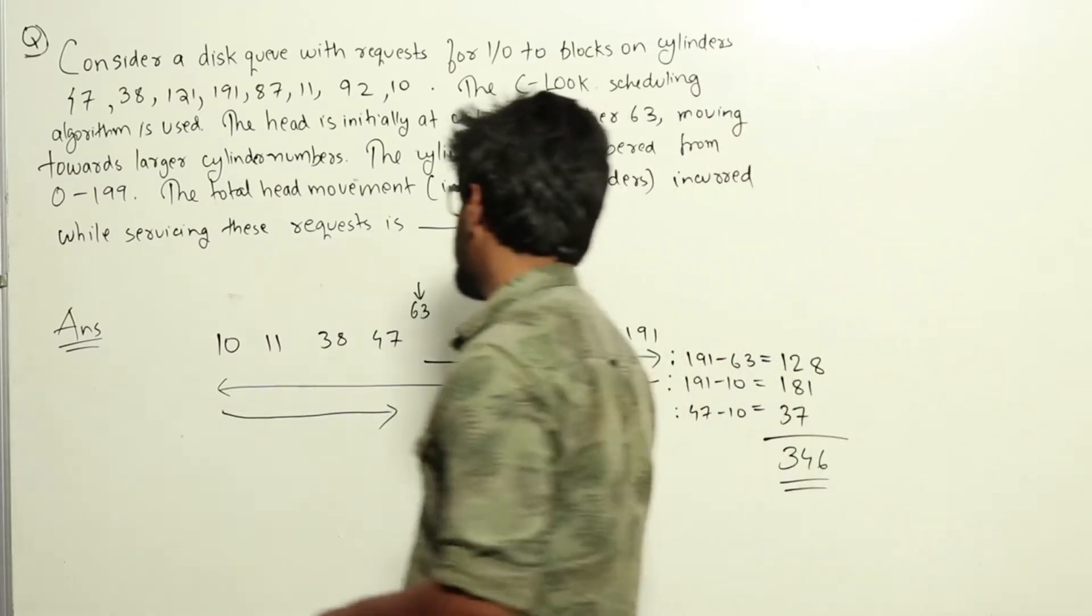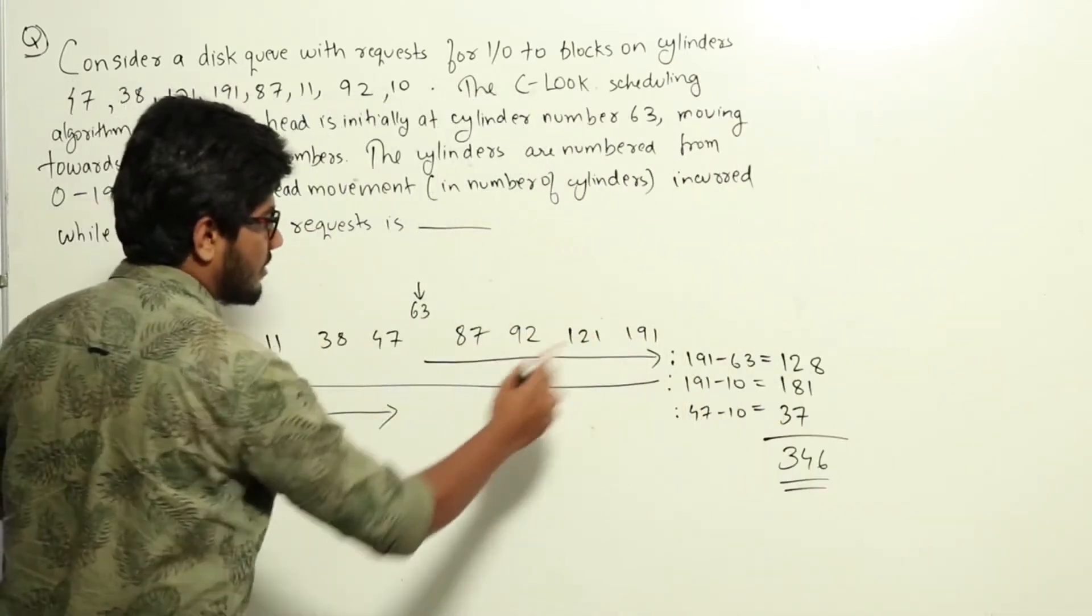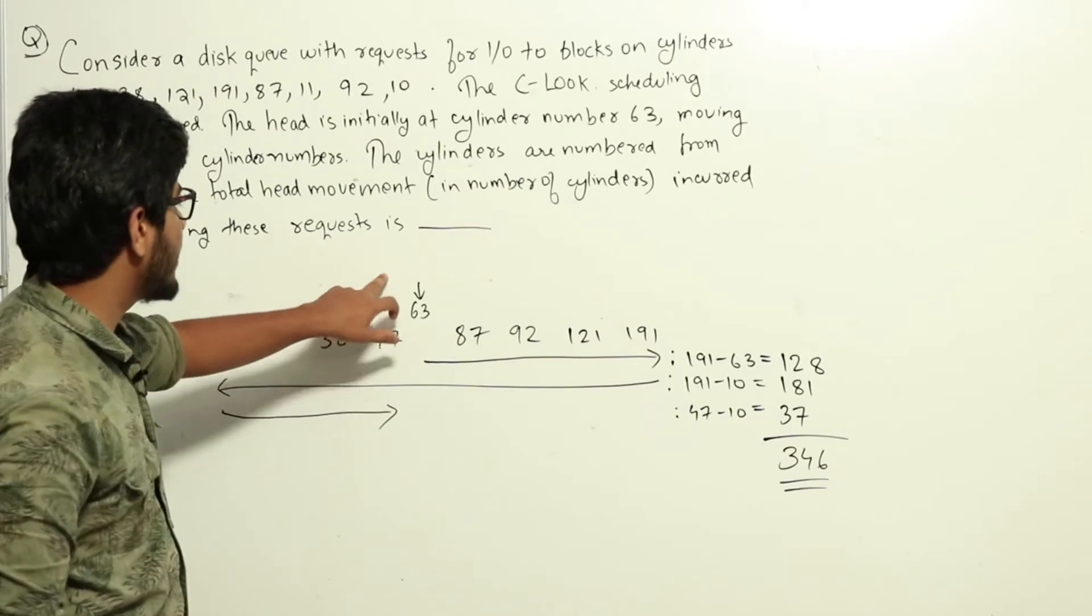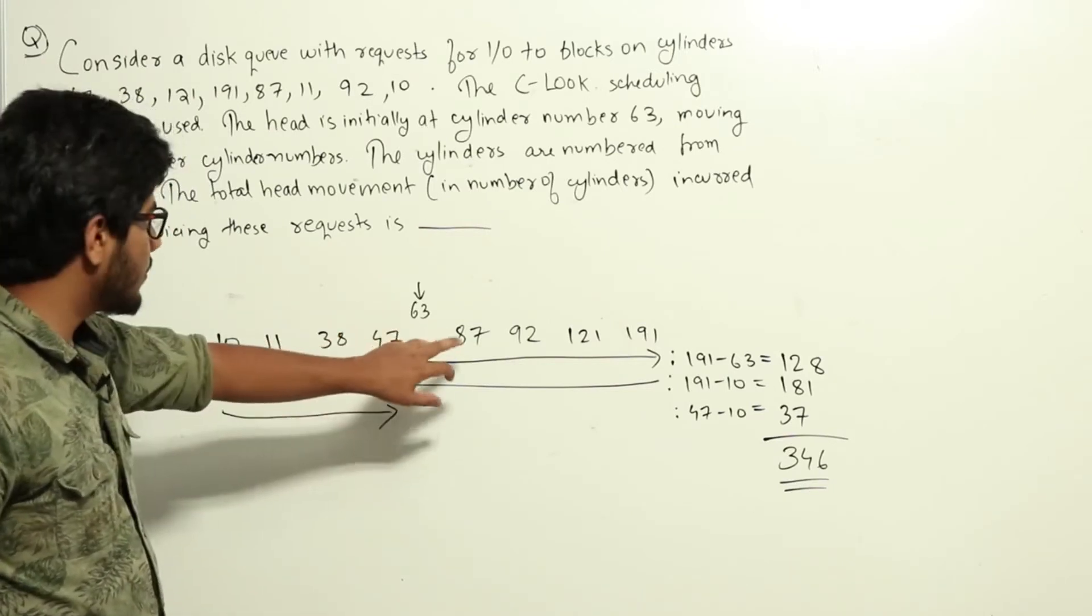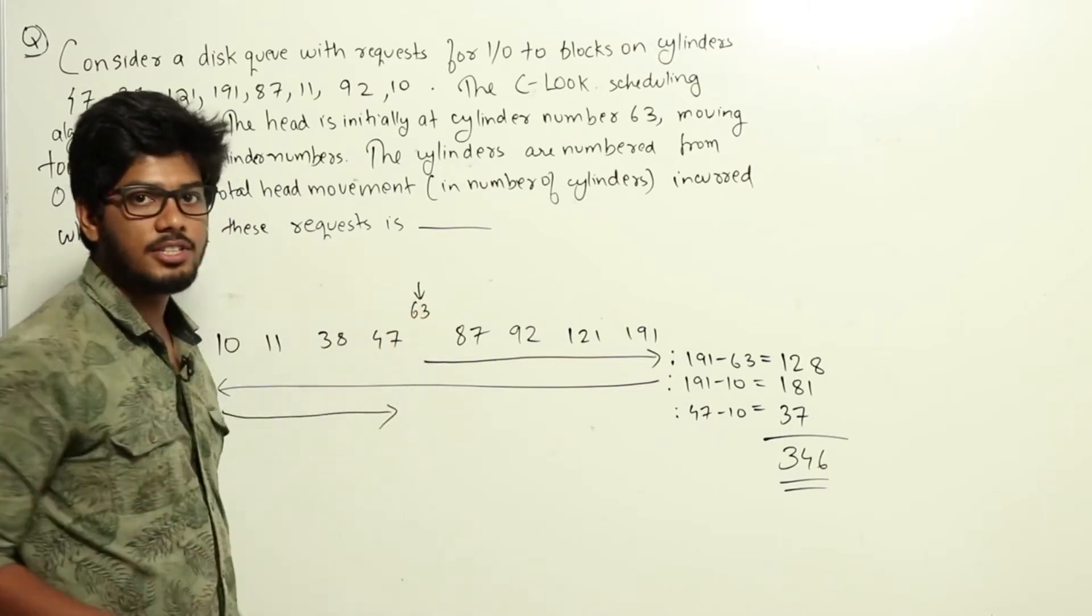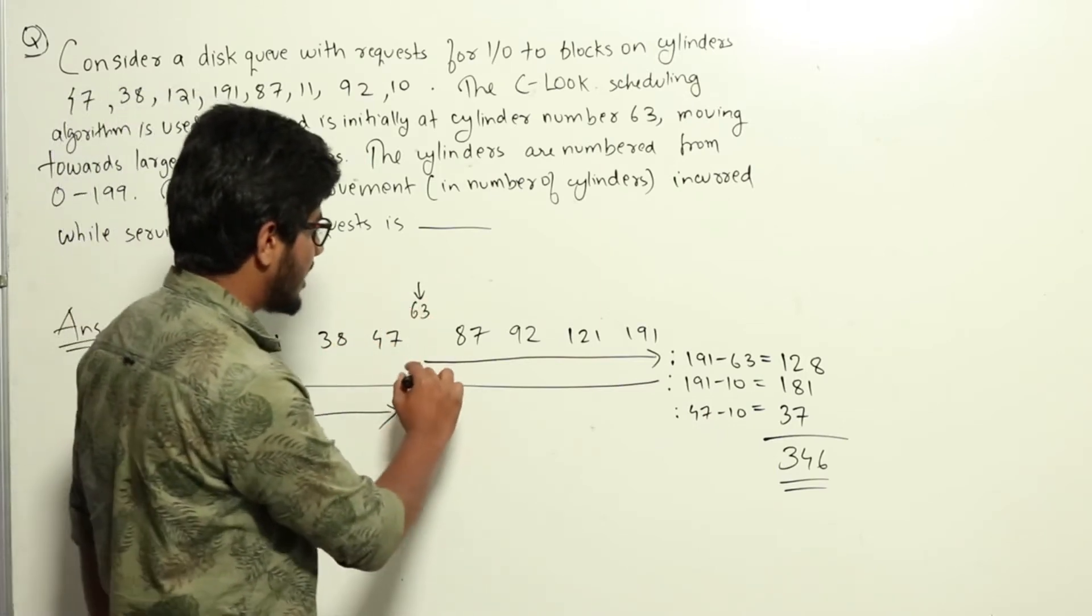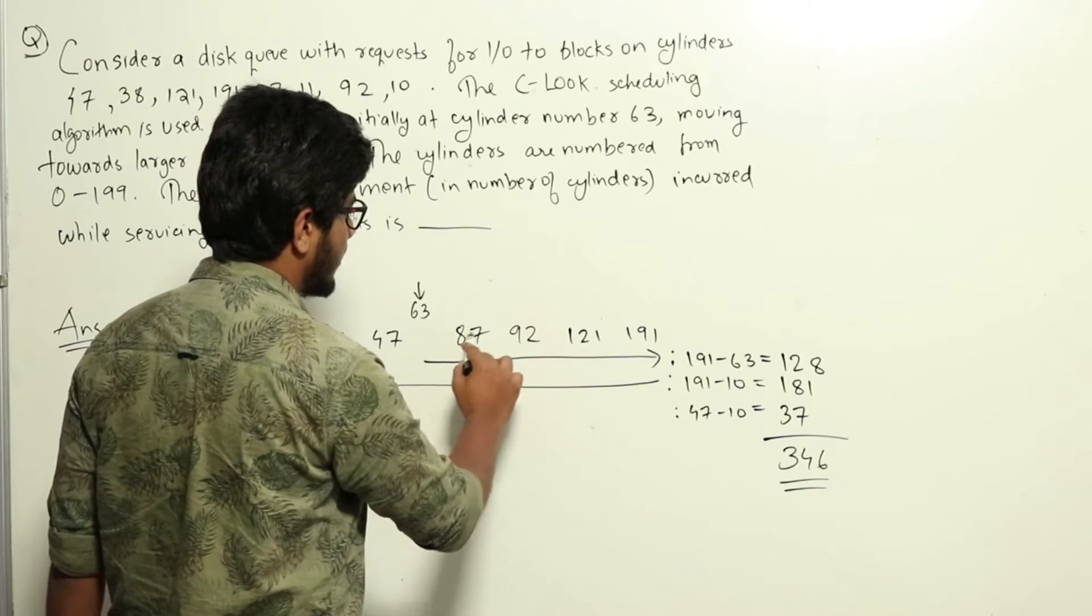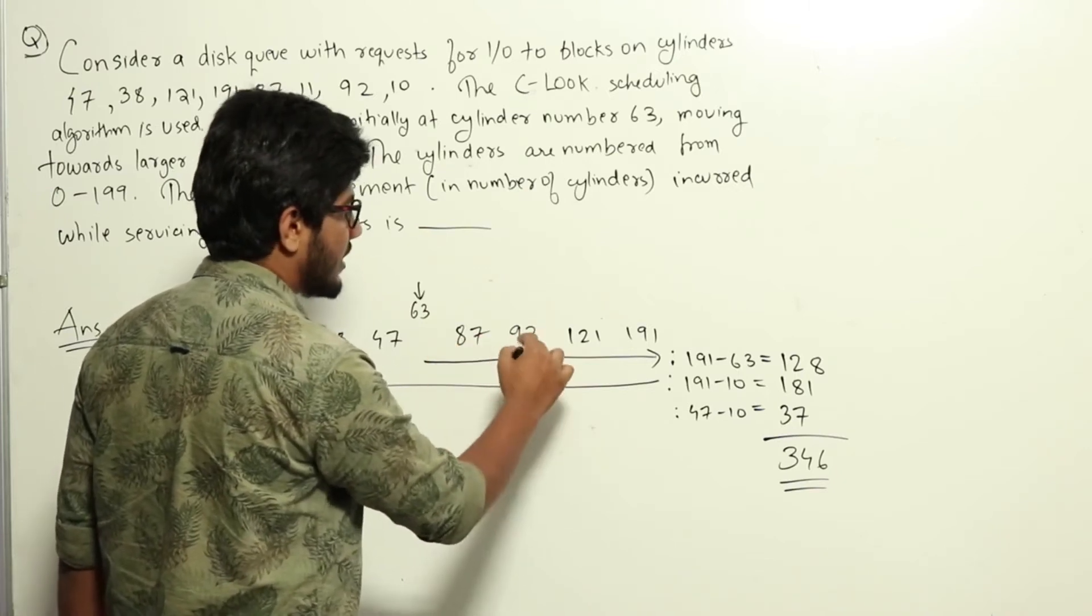Here in the question they are asking us about CLUK. So these are the requests which I have given in sorted order. Initially they are saying that head is at 63 and moving towards higher cylinder numbers. So what CLUK scheduling algorithm would do is, it will keep on moving right and servicing whichever requests are there in the order.